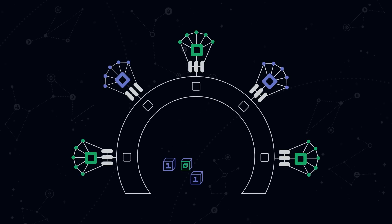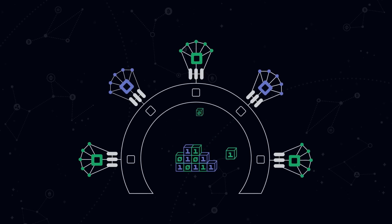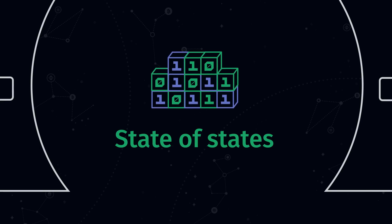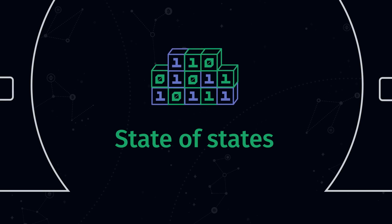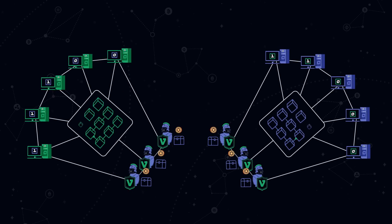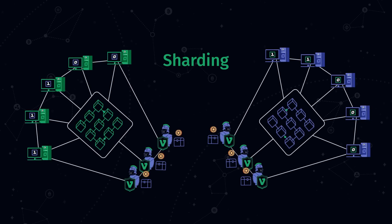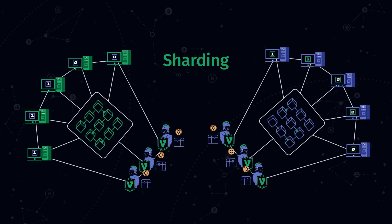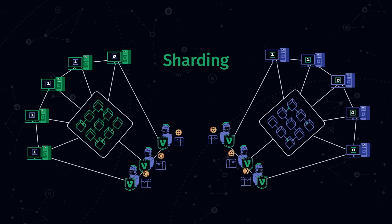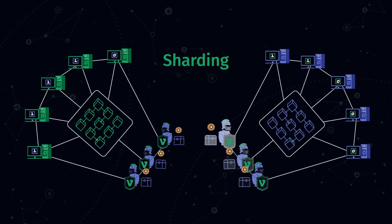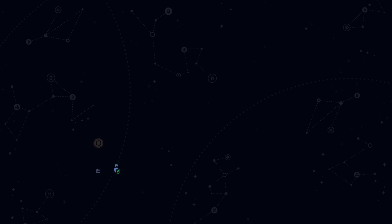Thus, the Relaychain collects states from parachains and makes them into what is called a state of states — the overall status of the system. If you are familiar with the concept of sharding, you can safely say that parachains are Polkadot's shards, as one set of validators is responsible for a specific parachain.